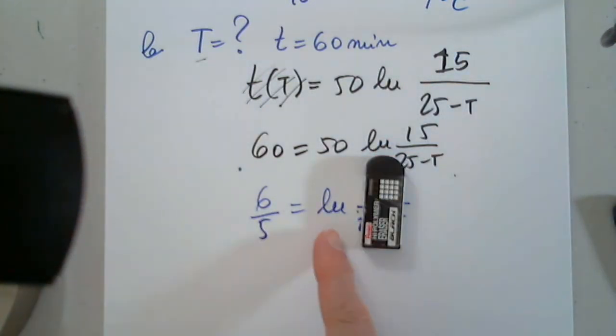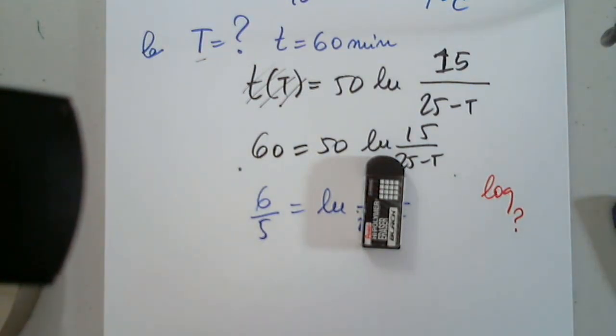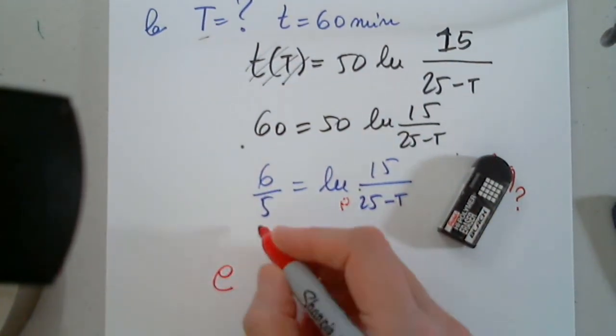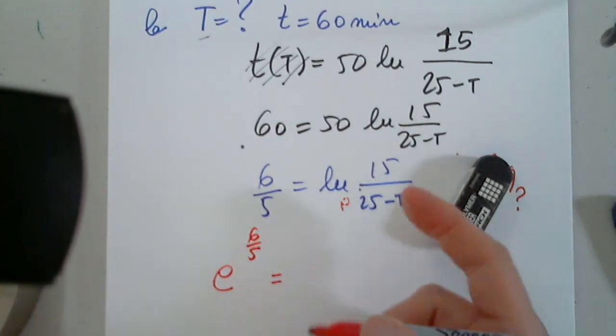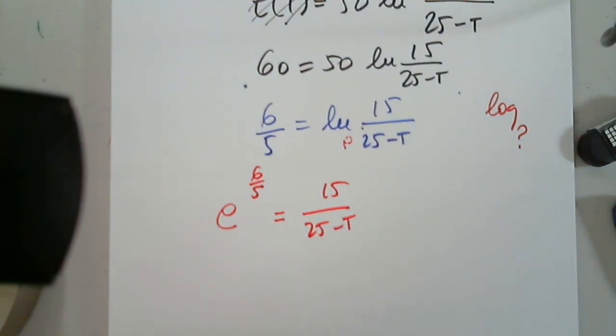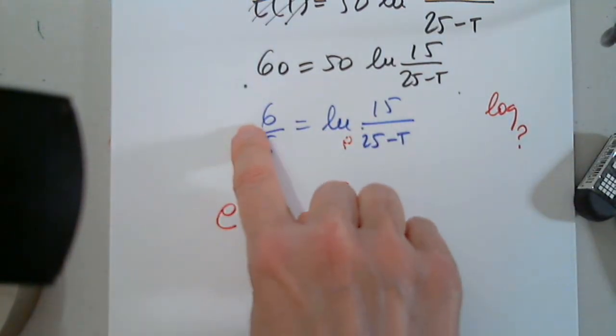Of course, you're going to say divide both sides by 50. 6/5 equals ln(15/(25-T)). I don't see the base of natural log. What is the base of natural log? E. Indeed. Very important to remember. E raised to this power equals this number. E^(6/5) equals 15/(25-T). Yes, I know it's ugly. Just don't look at it. It's just a number.